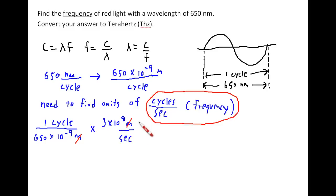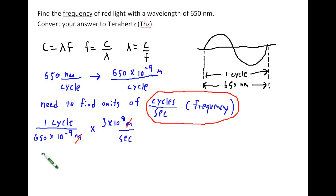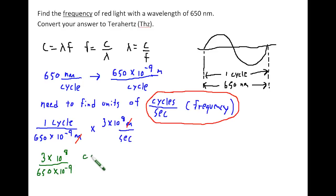We know this is going to be a large number, which is what we'd expect for frequency, because we have a large number — 3 times 10 to the 8th — divided by a very small number. Any time you divide a large number by a very small number, you get a very large number. So rewriting what we have, we end up with 3 times 10 to the 8th over 650 times 10 to the minus 9th, giving us cycles per second, which is what we're looking for.